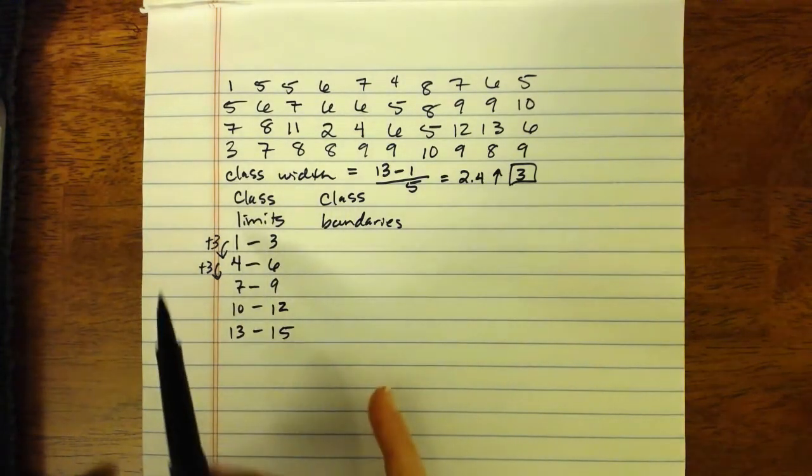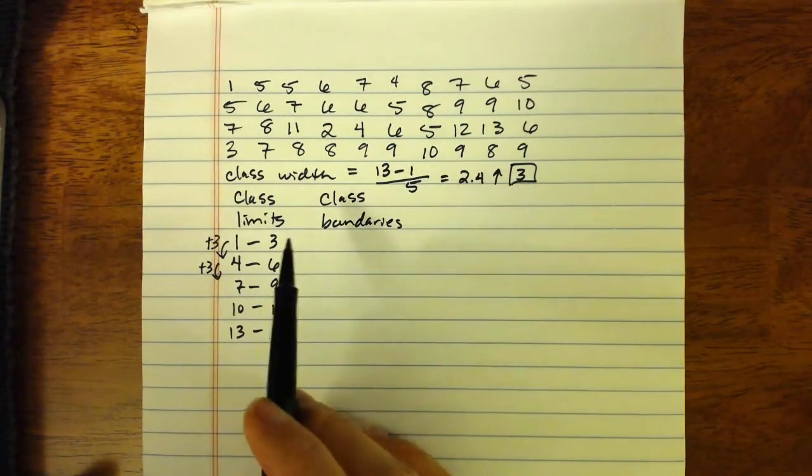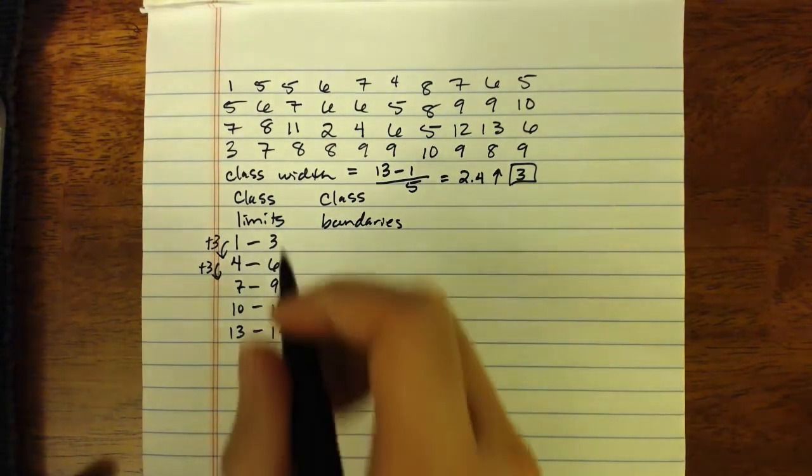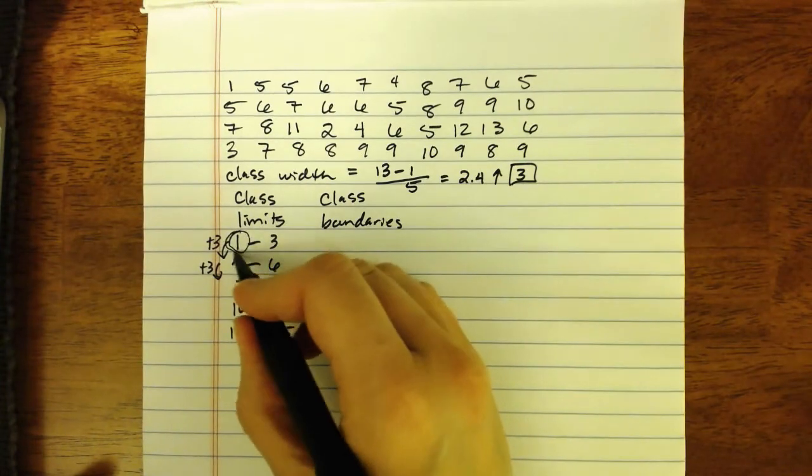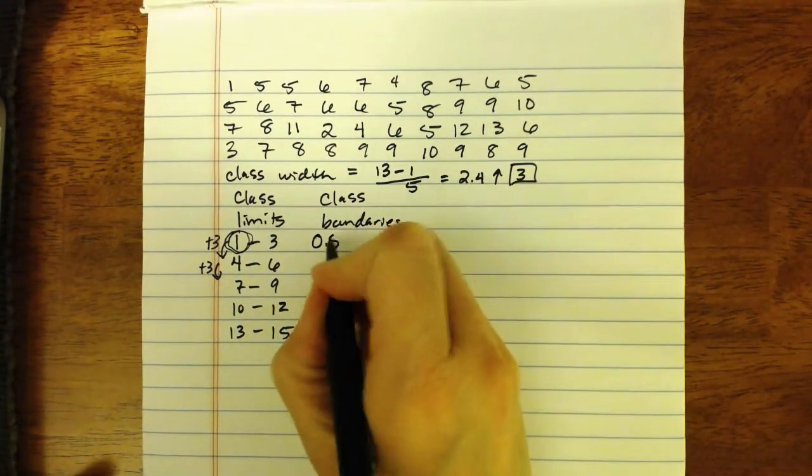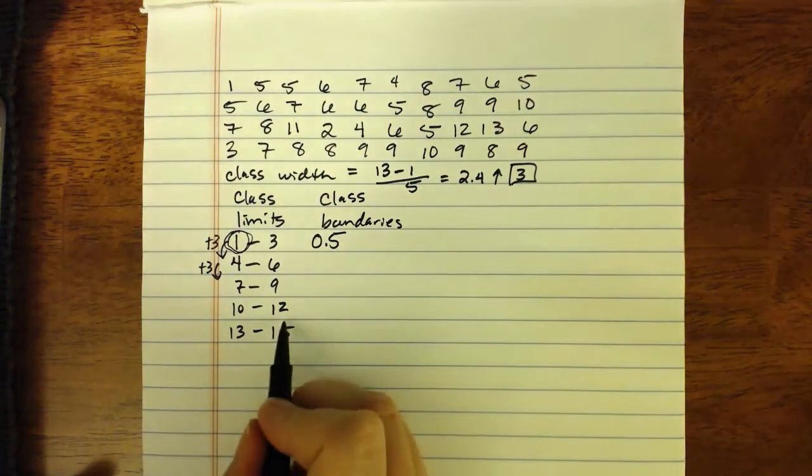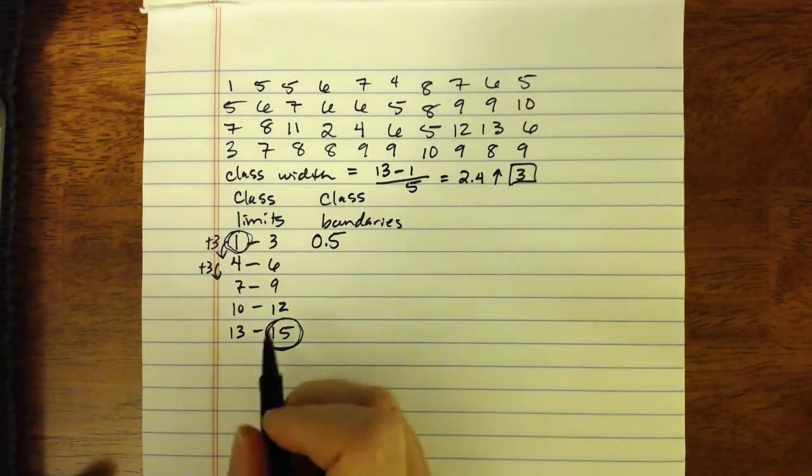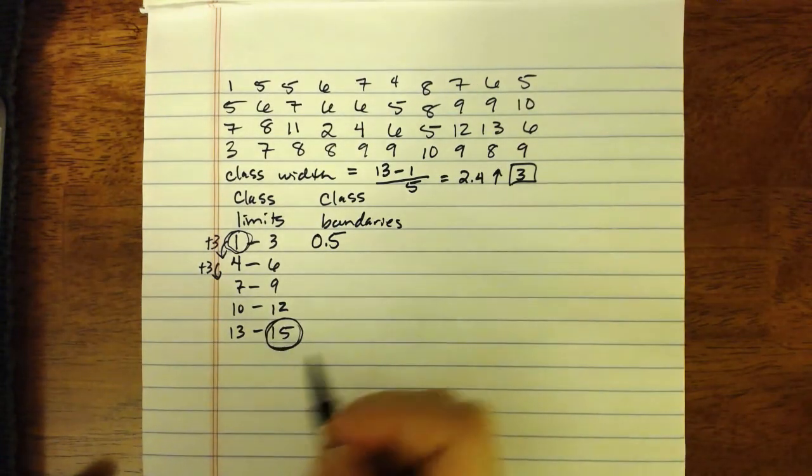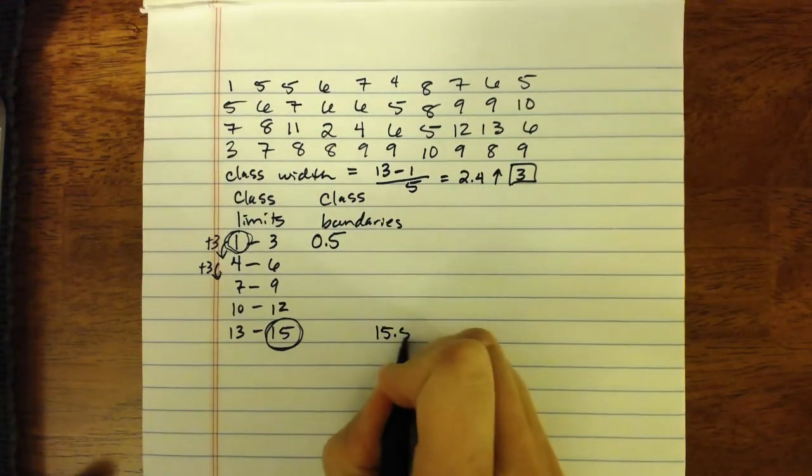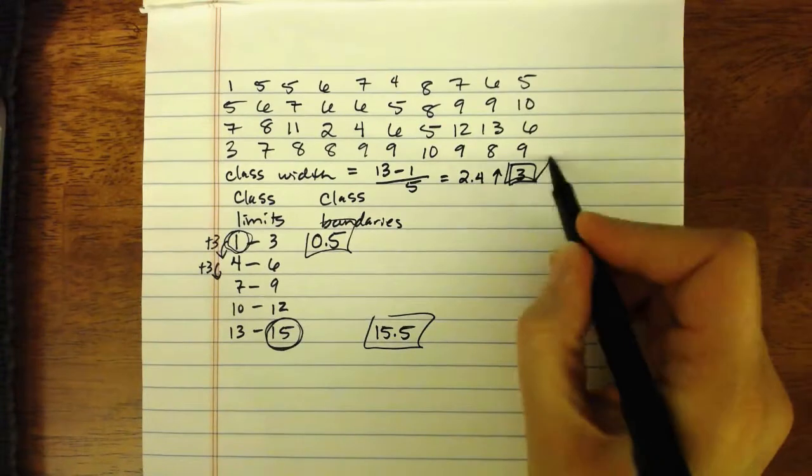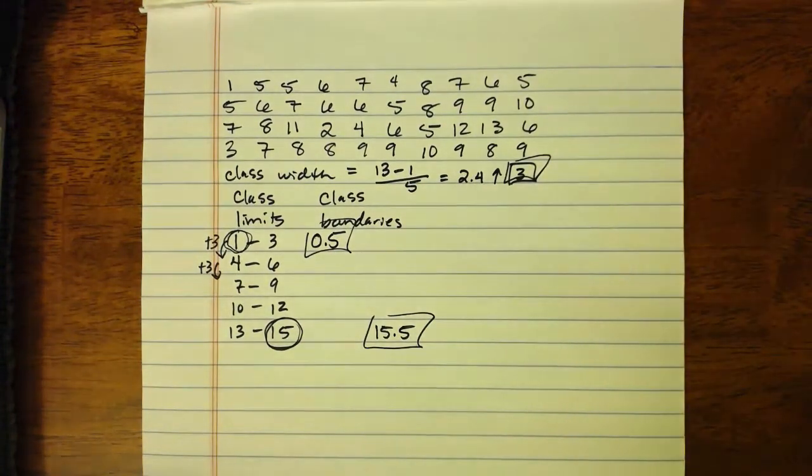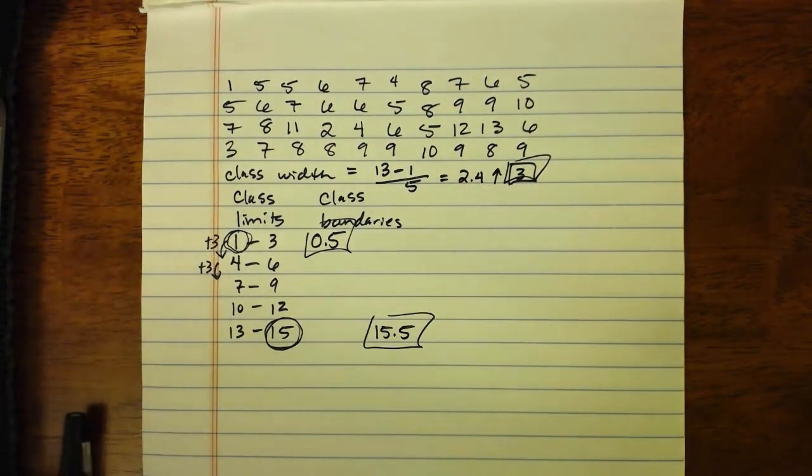And all you really need to know in order to make a histogram in your calculator from your class boundaries is the lowest class boundary, which if our lowest class limit was 1, our lowest class boundary would be 0.5. You also need to know the highest class boundary, which if our highest class limit was 15, our highest class boundary would be 15.5. These three things are the only three things that you need to make a histogram in your calculator.